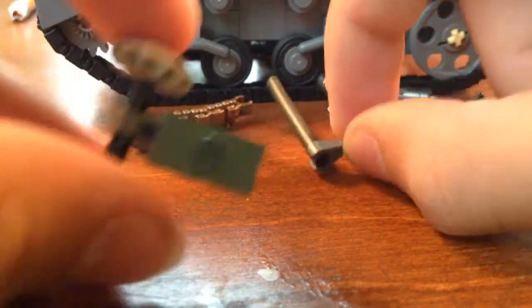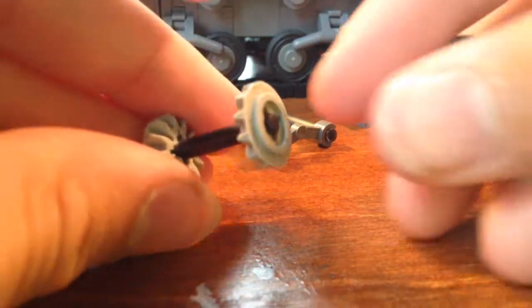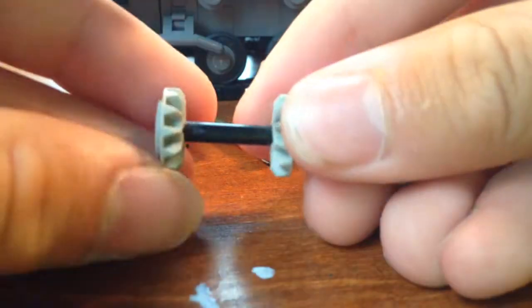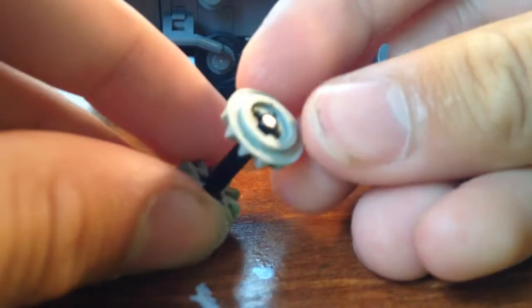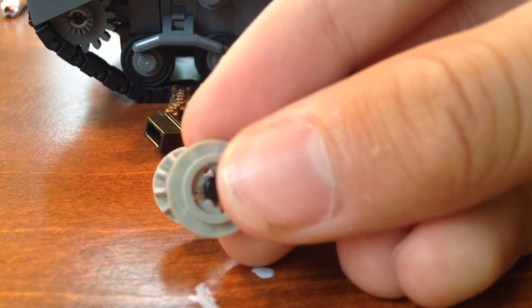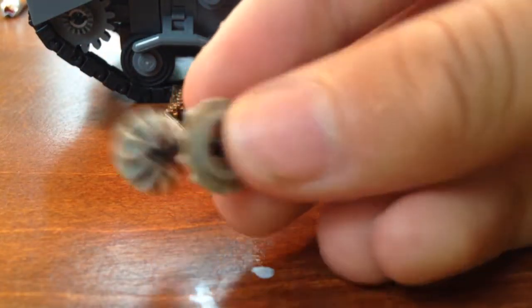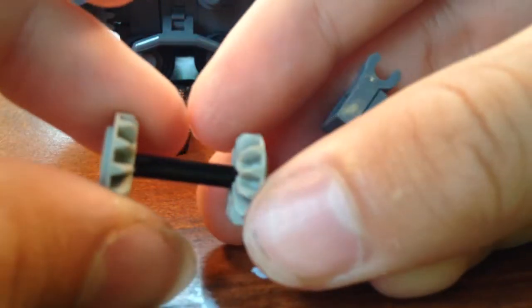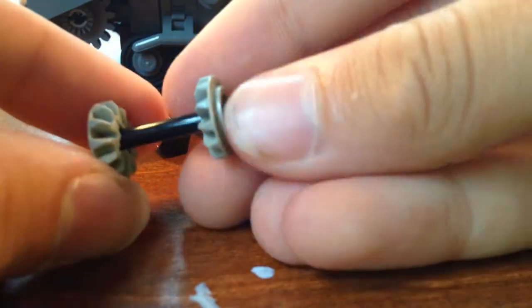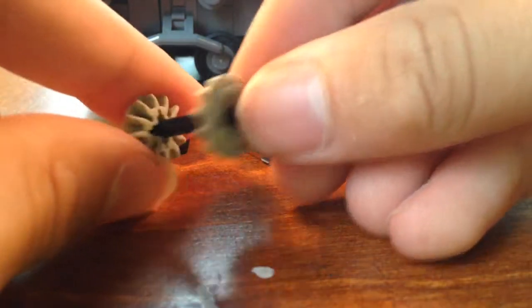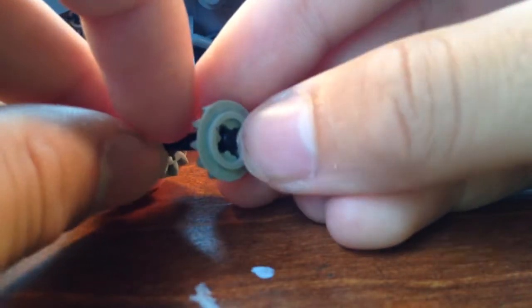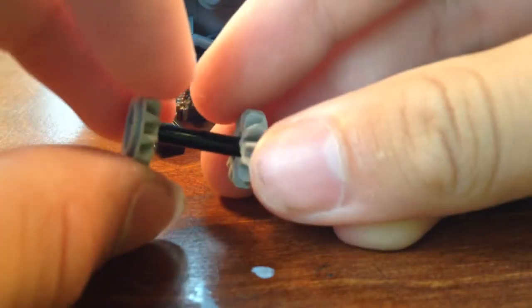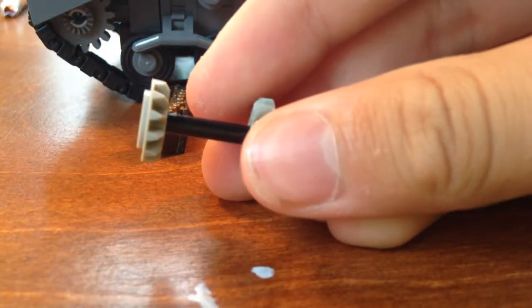We're going to start off with the base here. What you're going to need first is two of these little gear pieces right here. You can kind of see them. And a LEGO rod piece in the middle. Pretty self-explanatory. You're just going to want to slip these on like that, and you'll be good to go. This doesn't matter. This can be flex tubing or just a normal LEGO rod. So, that doesn't really matter too much.